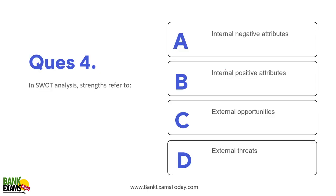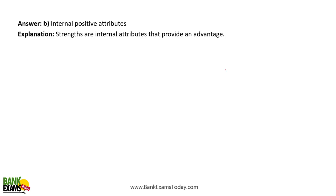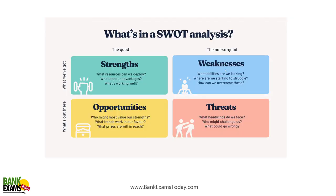Now let's move on to SWOT Analysis — most of you have already come across this topic. In SWOT analysis: S stands for Strength, W for Weakness, O for Opportunities, and T for Threat. Strength refers to internal positive attributes. You should remember the full forms — these are very commonly tested.